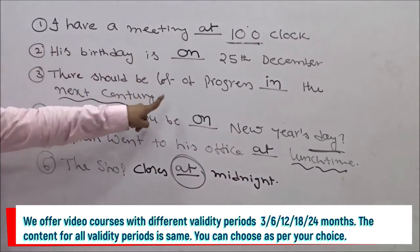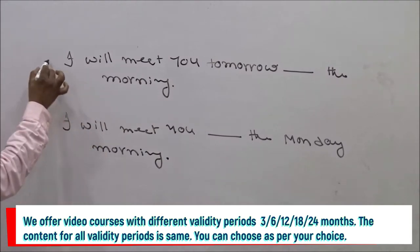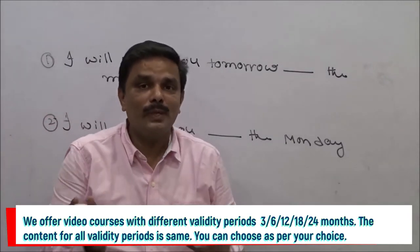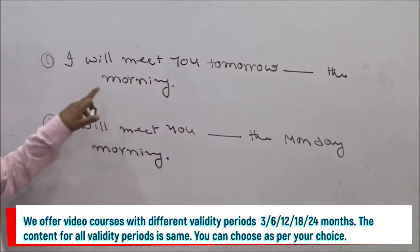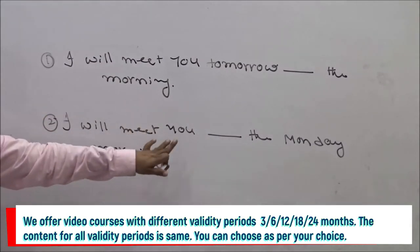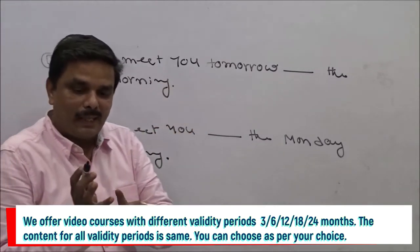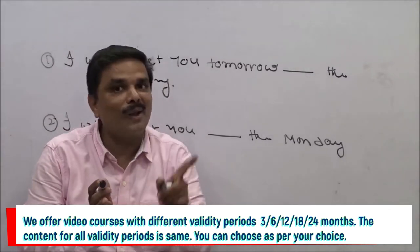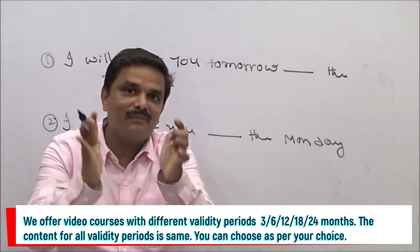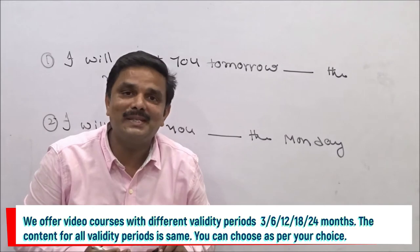Here, this morning is dominating 'tomorrow,' so we use 'in.' There, Monday is dominating 'morning,' so we use 'on.' You can construct a sentence using all three: 'I will meet you at nine o'clock in the morning on next Monday.' All three prepositions used together. Summary: 'at' is for more specific timing; 'on' is for dates and days; 'in' should be used in a general sense for a long period of time.